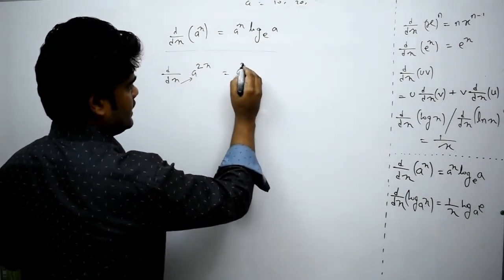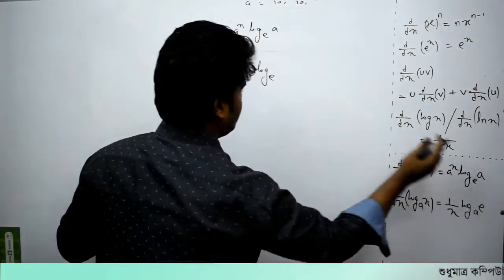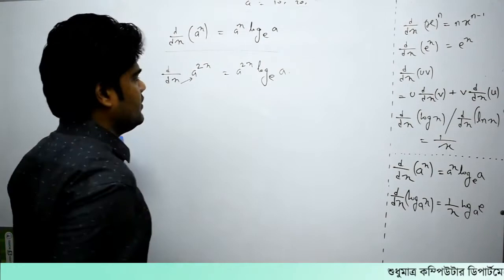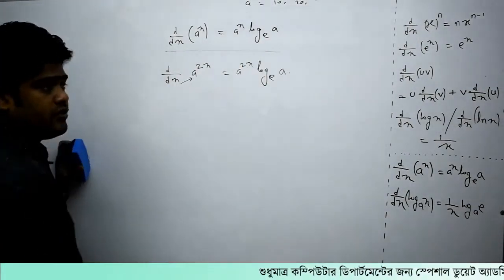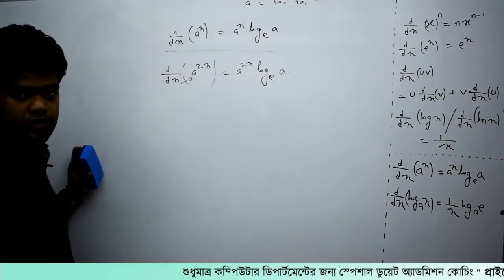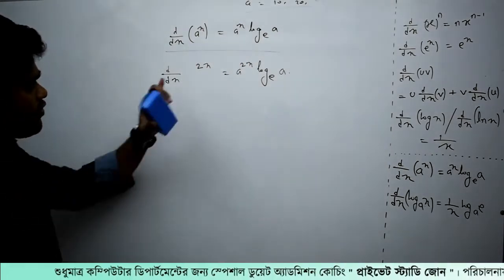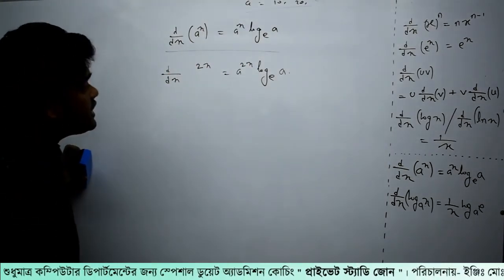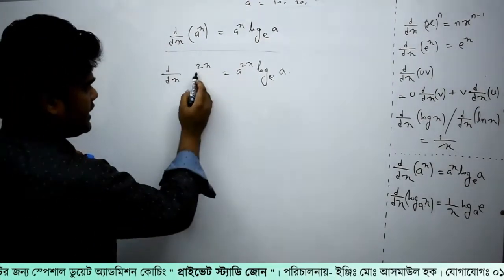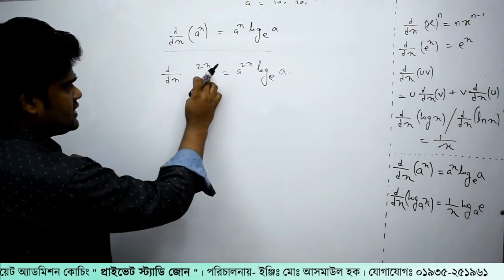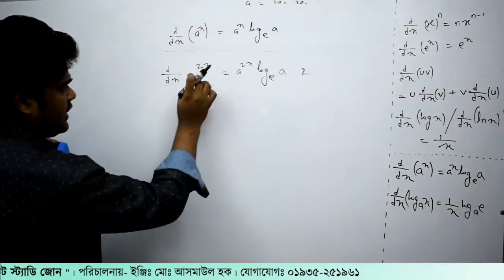a to the power x, log e — take a look at the film. So 2x: the derivative gives 2x times a to the 2x times log a. We will say that 2x dives out, giving 1 times 2x. So the answer is a to the power 2x times log a times 2x.